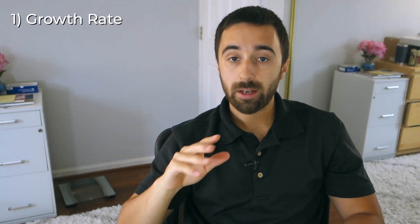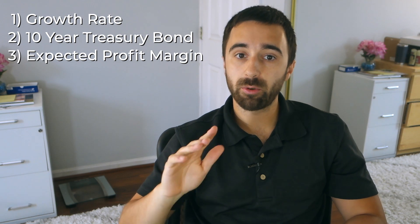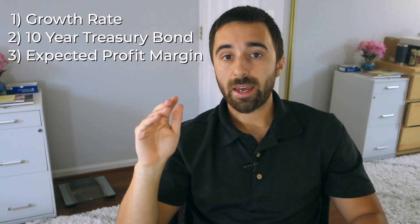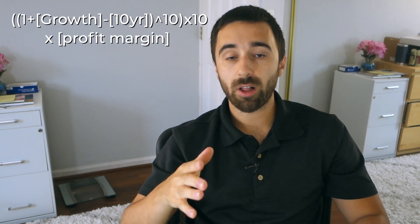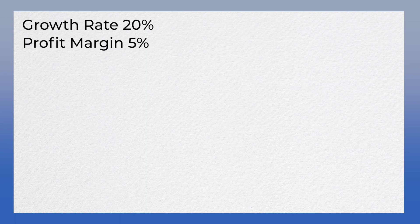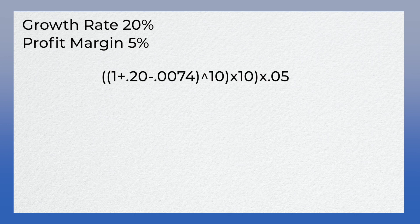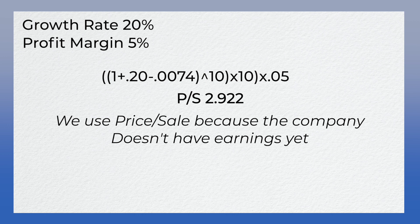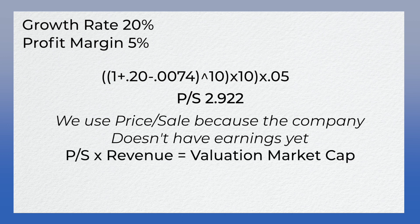The last thing I want to show you is how to calculate a company's value when it isn't profitable yet. For this we need the growth rate, the 10-year treasury bond rate, and the profit margin we expect them to achieve when they do become profitable. We take the exact same formula as above and multiply it by that expected profit margin. A company growing at 20% per year with an expected profit margin of 5% would look like: (1 + 0.2 − 0.0074) to the 10th power times 10, then times 0.05 — giving us a price-to-sales ratio of 2.922. When you hear price-to-sales, think price-to-revenue, because generally that's all it is. You then multiply this number by the revenue and compare it to the market cap.